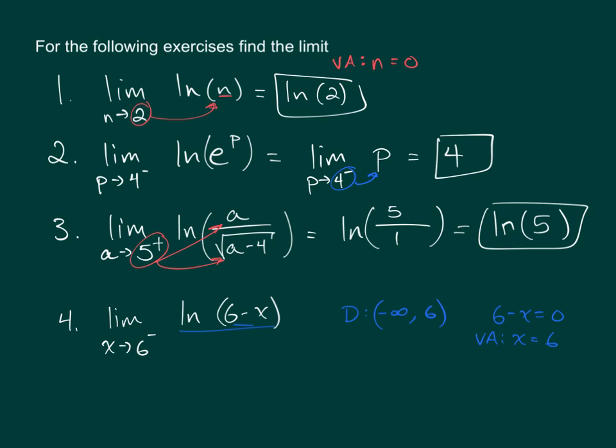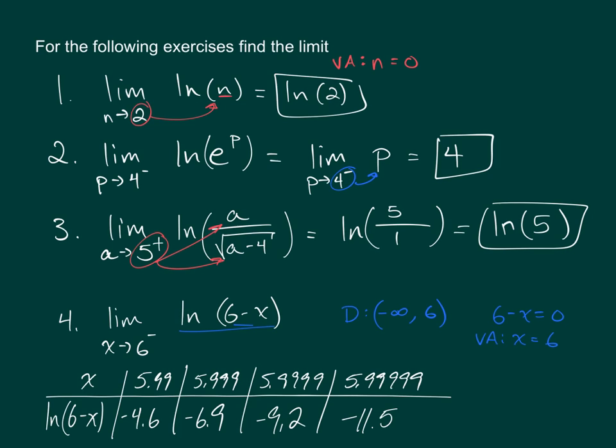Are they getting really big in the positive or negative direction? With this table, you can see that as x gets closer to 6 from the left, these numbers keep getting more negative. So we can say for sure that this limit equals negative infinity.